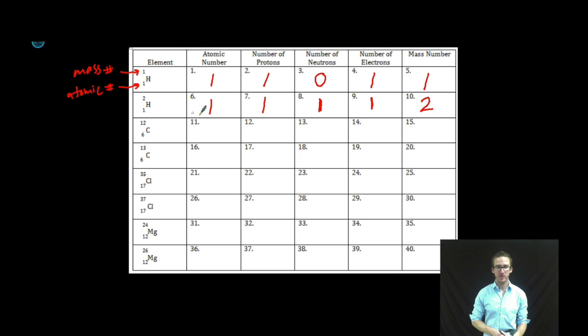All right, moving along, let's do some carbon-12. Atomic number 6, indicated there by the number at the bottom. That's the same as the number of protons. Number of neutrons in this isotope of carbon is also 6. I simply subtract the atomic number from the mass number. Number of electrons, 6 as well. In an electrically neutral atom, protons will match electrons. And then our mass number, sum of the protons and the neutrons, 12.